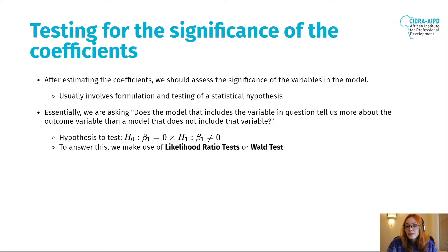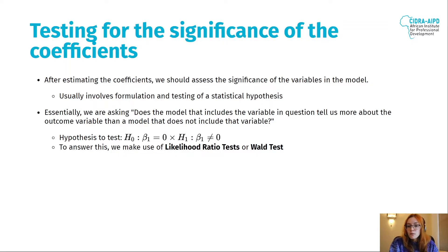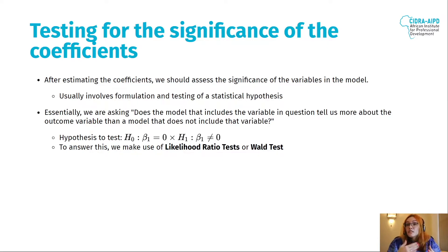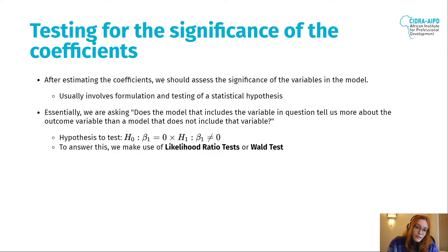What we're actually testing is whether the model should include the variable in question. For example, the null hypothesis is beta one equals zero — it's not important — versus the alternative hypothesis that beta one is different from zero, meaning it is actually relevant to help predict the survival rate. To answer that, we can use two tests: the likelihood ratio test and the Wald test.